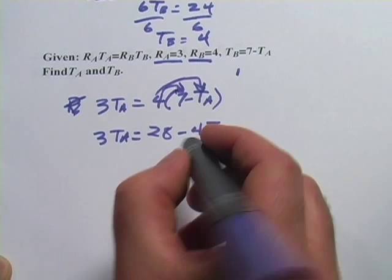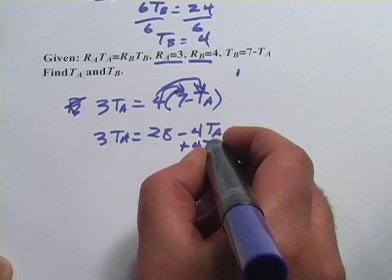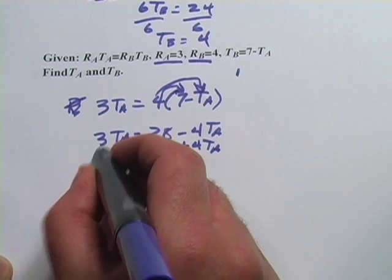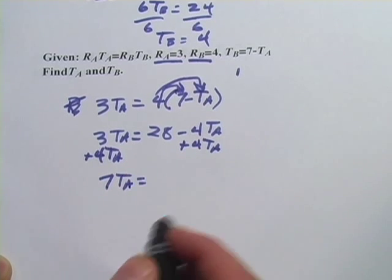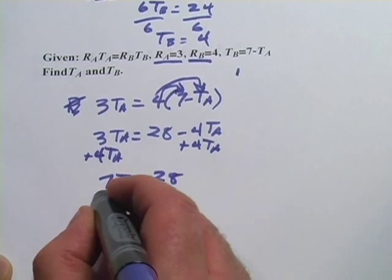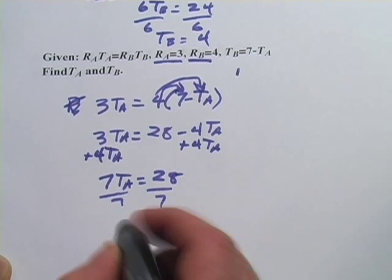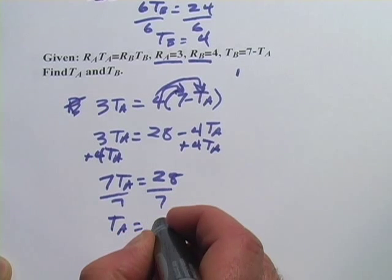I'm going to add 4 t sub a to both sides. I get 7 t sub a equals 28, then I divide by 7, and I get t sub a equals 4.